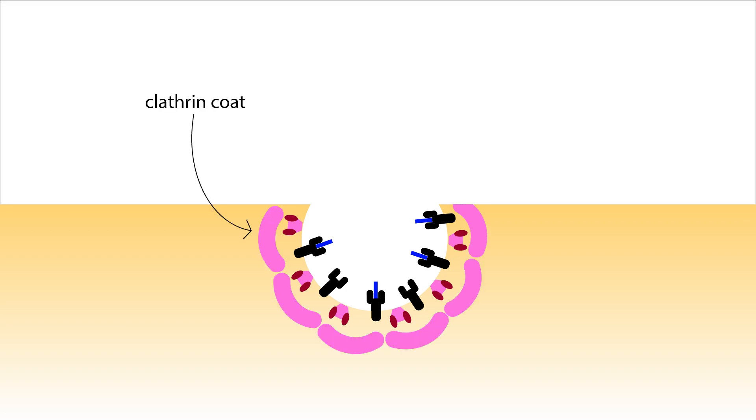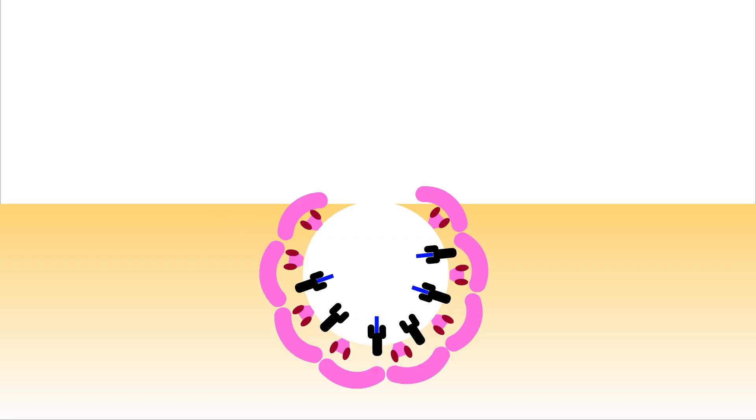As we described in our Cell Clips video on vesicle budding, the coat proteins COP1 and COP2 form complexes that naturally take the shape of a sphere. Clathrin works in the same way. So as several clathrin proteins bind AP2, the membrane starts to curve in toward the cytosol to form a budding vesicle.